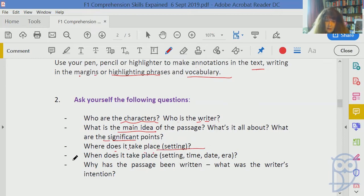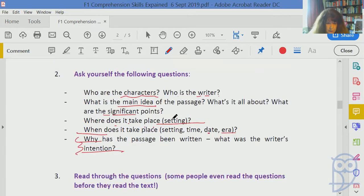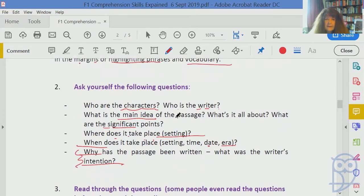Think: what's the main idea? What's significant in the passage? Get your highlighters out - some people can color code things. Continue asking: Where is this taking place? What's the setting? When does it take place? Is that important - the time, date, era? This century, last century, the previous century? This is where your experience comes to play. Maybe even why was the passage written? What was the writer's intention?